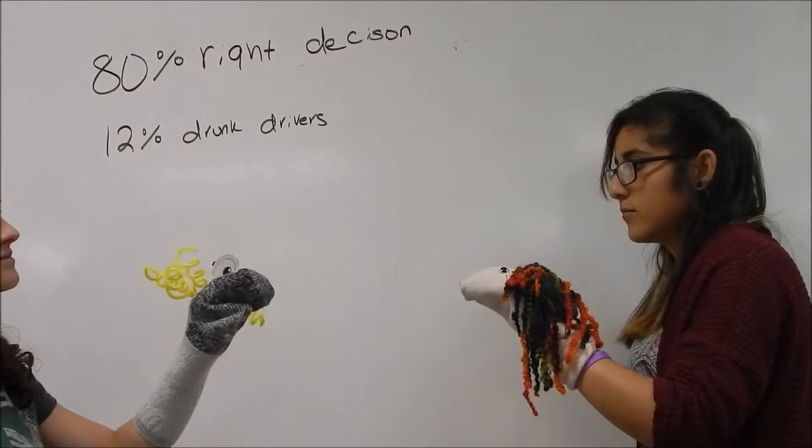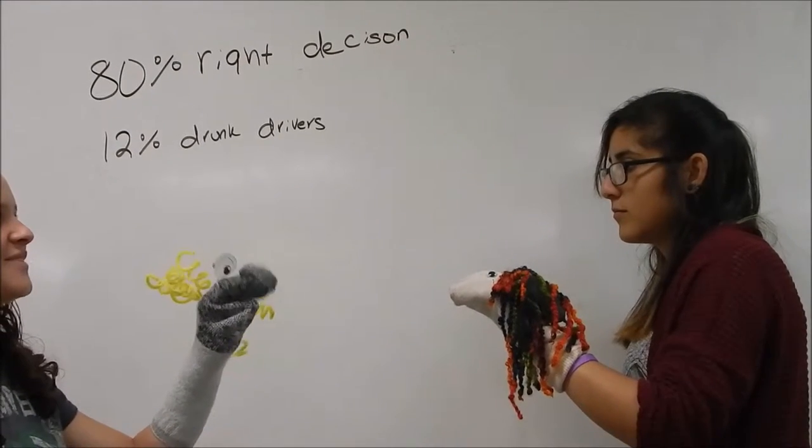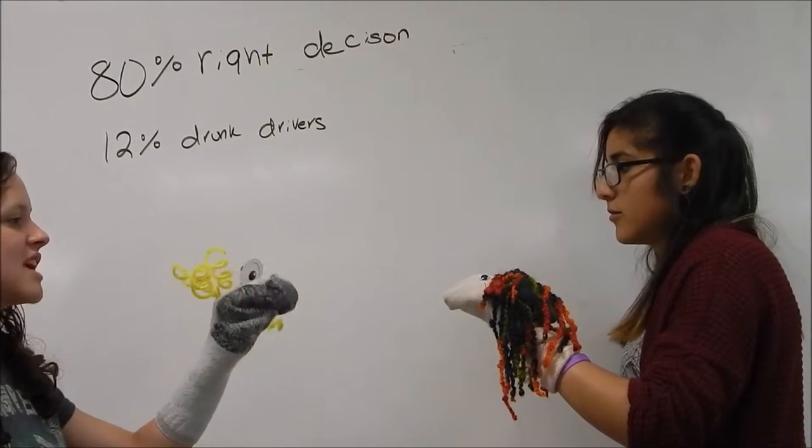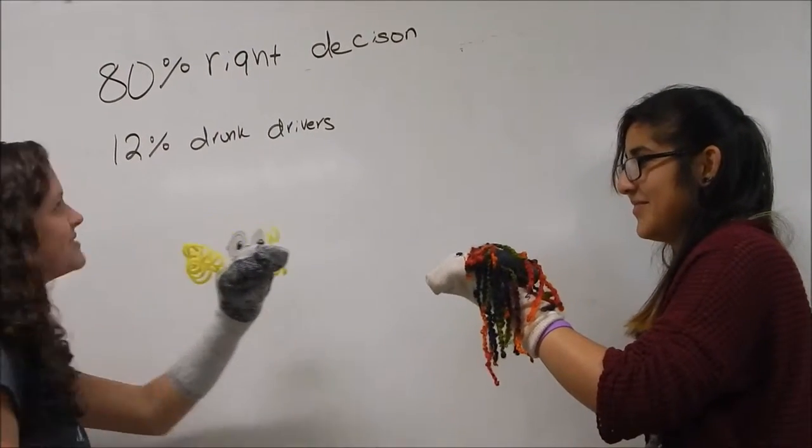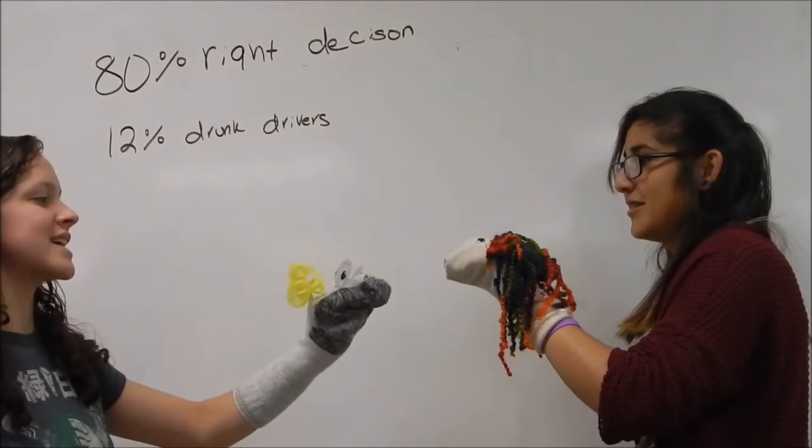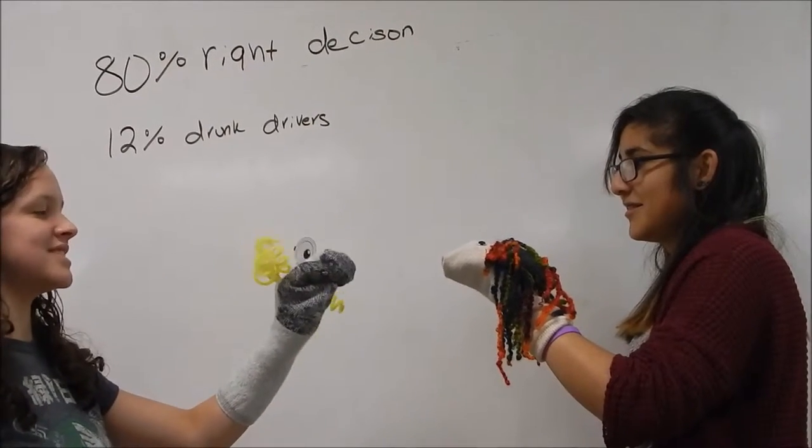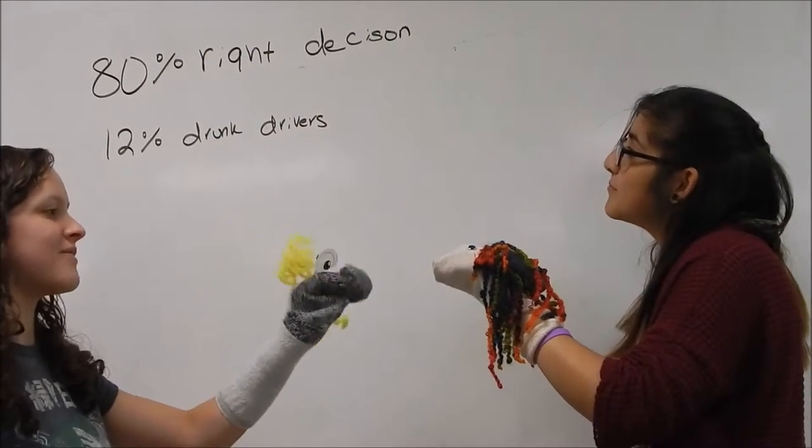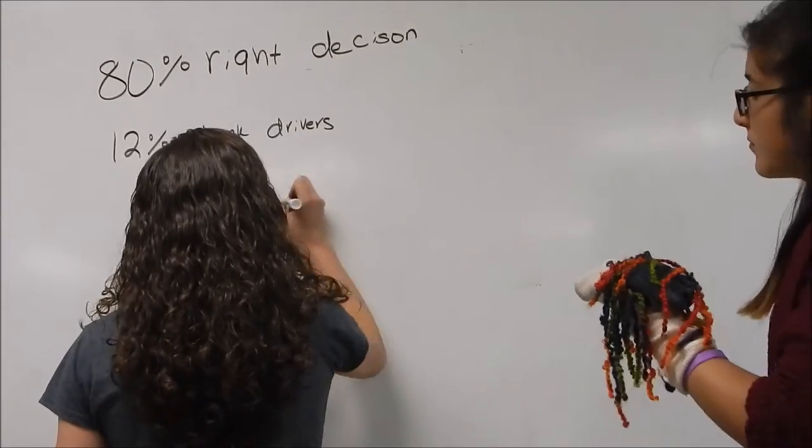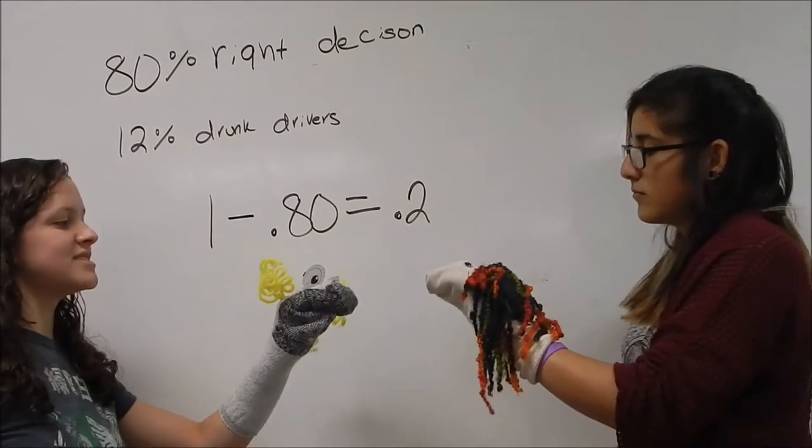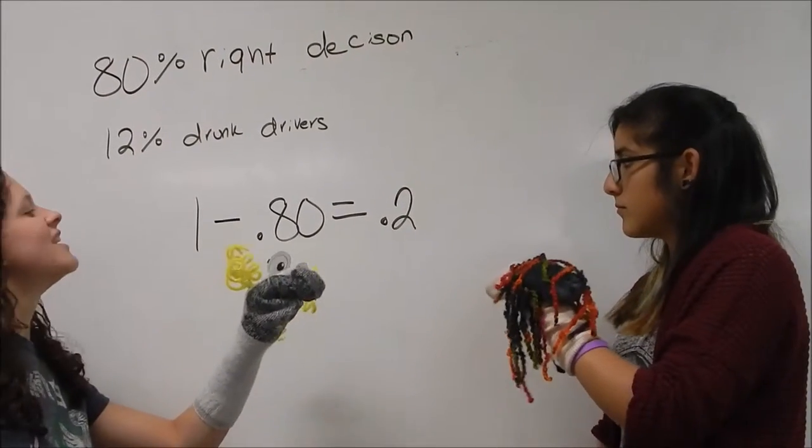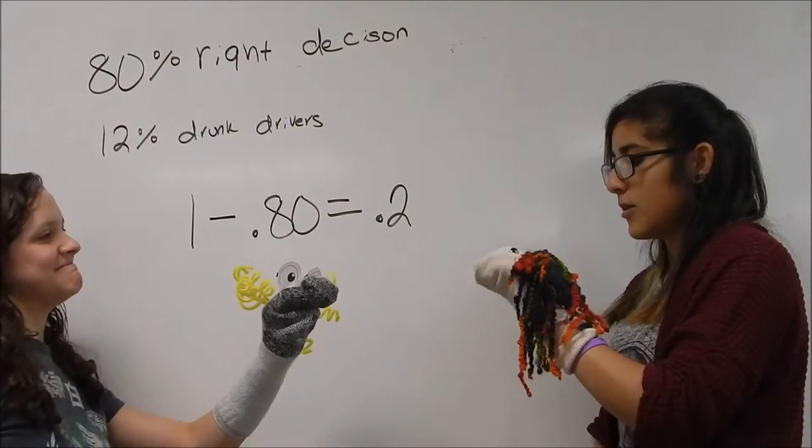So if you want to find out if you're going to be detained for further investigation, we need to know, have you been drinking? No. Awesome, great. So if you haven't been drinking and the police officer makes the right decision 80% of the time, then all we have to do is this. So this means you have a 20% chance of being detained. Oh, okay.